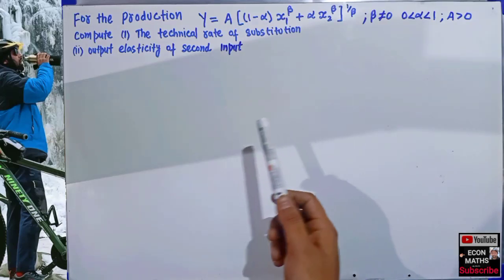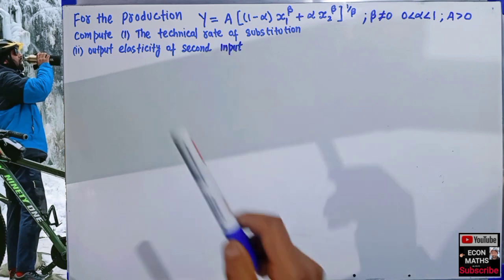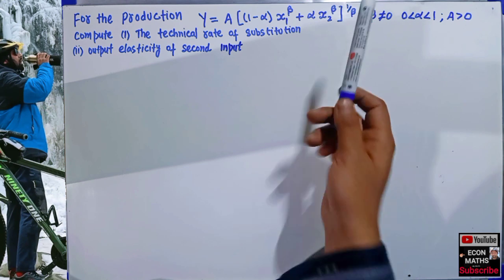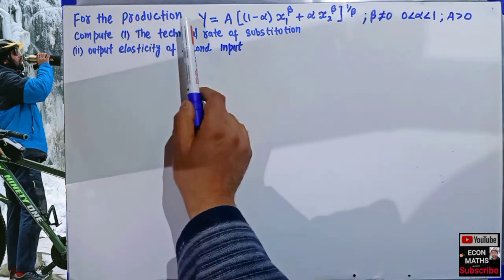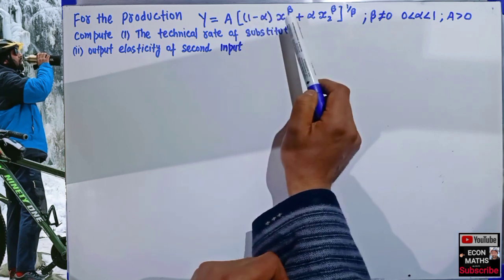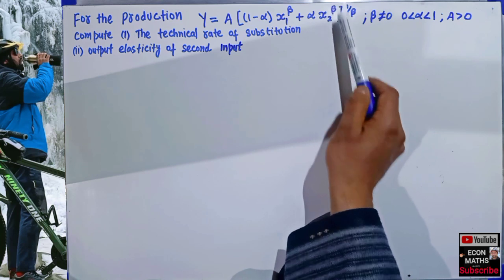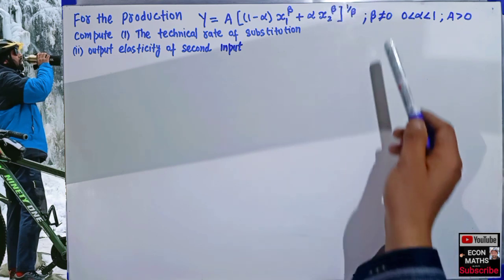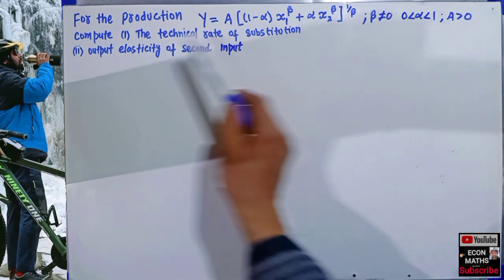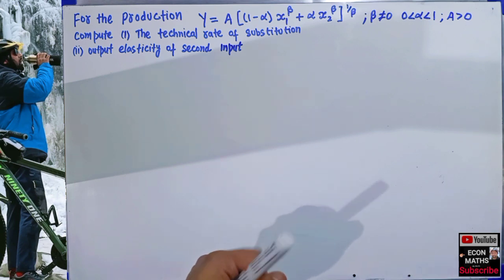The question is to find out the technical rate of substitution and output elasticity with respect to the second input of a constant elasticity substitution production function. The production function is y = a[(1 - alpha)x1^beta + alpha*x2^beta]^(1/beta), where beta ≠ 0, alpha lies between 0 and 1, and a > 0. We have to compute the technical rate of substitution and output elasticity of the second input.